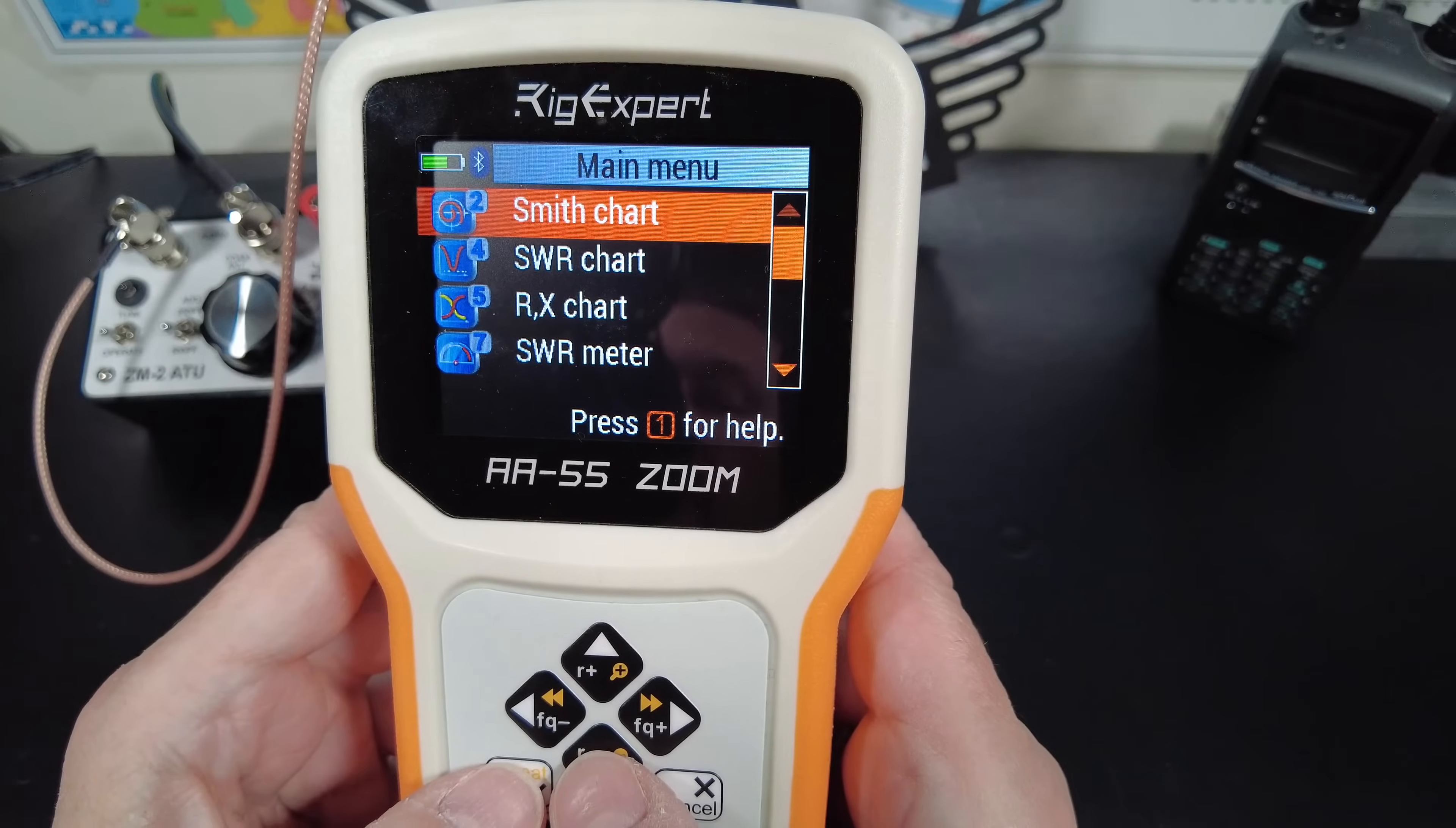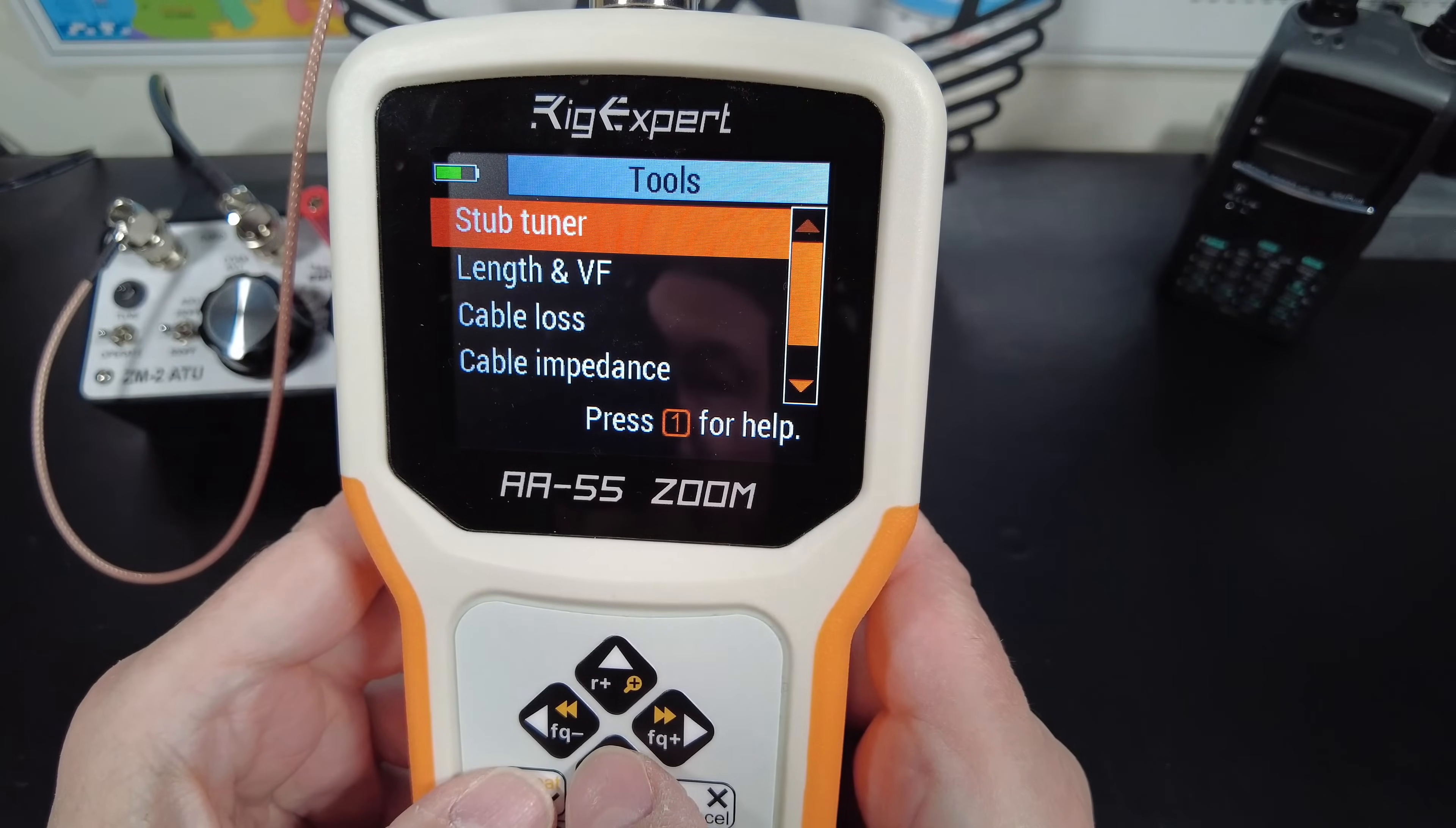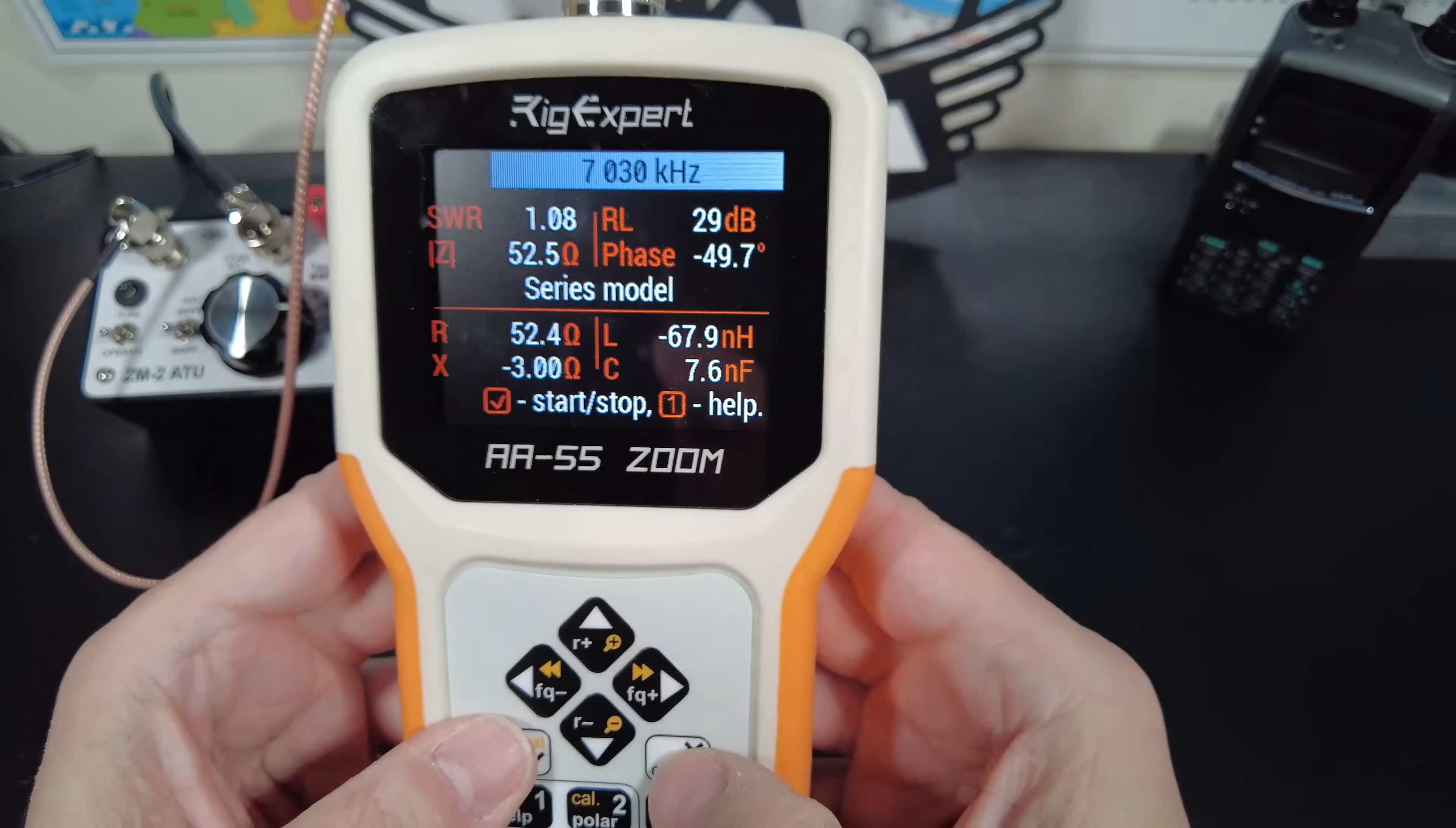You can also do a lot of other things with an antenna analyzer. This AA55 lets you see the Smith chart like you just saw, the SWR chart, an SWR meter. You can look at multiple frequencies to check the SWR. You can figure out the length or velocity factor of your coax. You could check your coax for loss. You can check your coax impedance. You can also look at the components that make up your impedance value. Like here, we talked about capacitance and inductance. You can see those here as well as resistance, the SWR. You can get a lot of information.